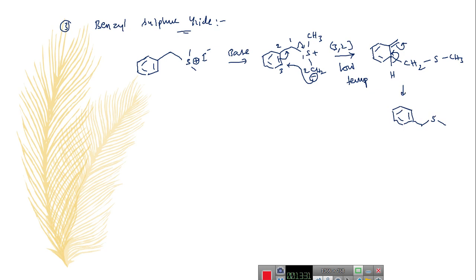This 3,2 sigmatropic rearrangement is like a Sommelet-Hauser rearrangement. In the Sommelet-Hauser rearrangement, the base-catalyzed rearrangement of ammonium salts generally produces amines, whereas in this case the base-catalyzed rearrangement of sulfonium salts produces sulfides. The sulfonium salt, in presence of base, undergoes abstraction of a proton to produce the benzyl sulfur ylide, which undergoes Sommelet-Hauser type 3,2 sigmatropic rearrangement and produces the stable sulfide.